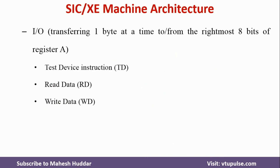Finally, the I/O operations: we have TD (test device) to check whether the input device is ready to read and write. Based on the value of TD, we perform the input/output operations. Every time, we can transfer a maximum of one byte — not more than one byte. So in this video, I have discussed the SIC-XE machine architecture.